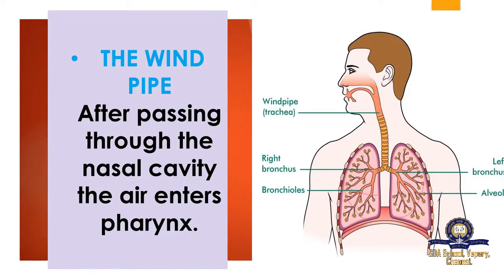The second part of the respiratory system is the wind pipe. First the nose is collecting the air, after which it enters the wind pipe, which is present in the trachea. After passing through the nasal cavity, the air enters the pharynx. As seen in the picture, air breathed in through the nose travels down through the wind pipe and then into the trachea, finally entering the pharynx.